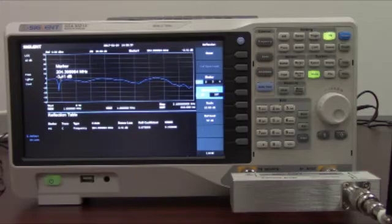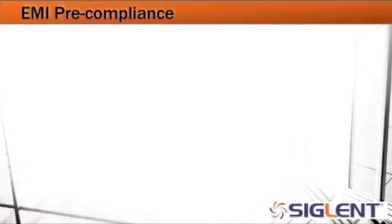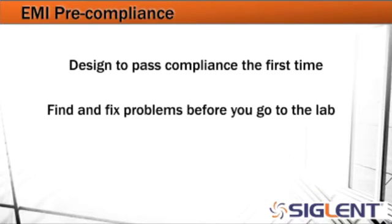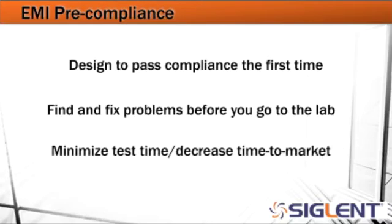There are some very nice automated features with many spectrum analyzers that allow you to characterize RF components in a simple way. Now let's take a closer look at EMI pre-compliance applications. With EMI pre-compliance, we want to design to pass compliance the first time — go to the lab once and get your certificate of compliance and get right to selling product. Compliance testing is expensive, and having to go back repeatedly can definitely hit you in the wallet. We want you to find and fix problems before you even get to the lab. With a spectrum analyzer like the Siglent SSA 3000X, you can do a lot of troubleshooting ahead of time and minimize test time and decrease time to market.